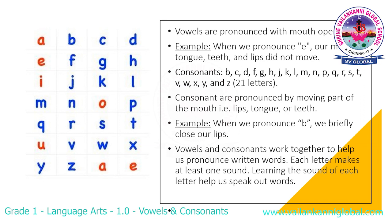...R, S, T, V, W, X, Y, and Z — 21 letters are known as consonants. Consonants are pronounced by moving part of the mouth, that is lips, tongue, or teeth. For example, when we pronounce B, we briefly close our lips.